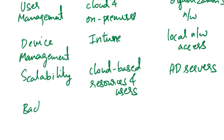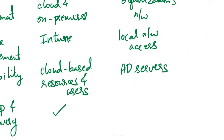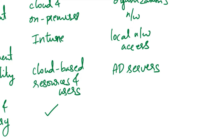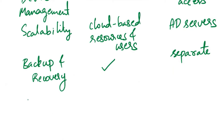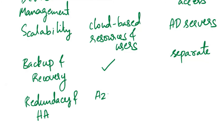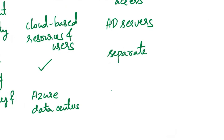The next aspects of comparison are backup and recovery, and redundancy and high availability. Azure Active Directory provides built-in backup and recovery options for identities and configurations, and is hosted across multiple Azure data centers for high availability. On-premises Active Directory requires separate backup and recovery options, as well as local redundancy and high availability configurations.